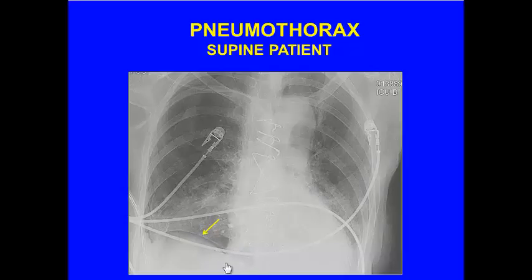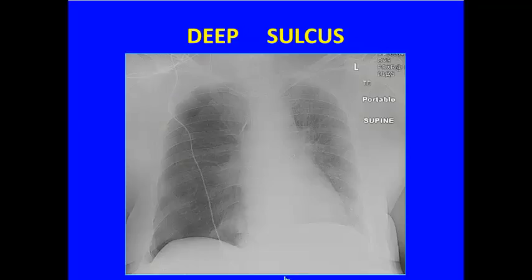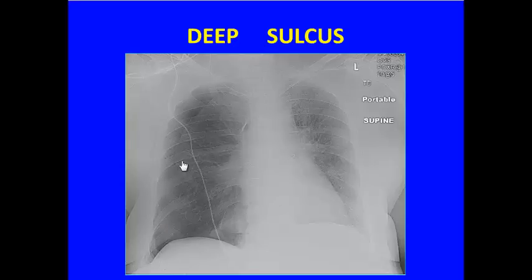What else can we see? We talked about that medial air — sometimes the air can track more medially, and sometimes we'll see it collecting at the diaphragm or tracking into the fissures. We can see the costophrenic angle or the sulcus appearing deeper on the side with the pneumothorax, with the large pneumothorax tracking along the chest wall laterally and maybe a little air tracking into the minor fissure.